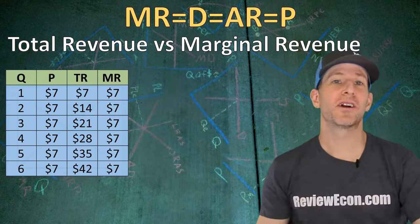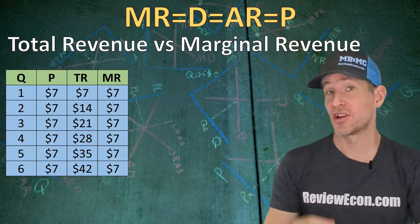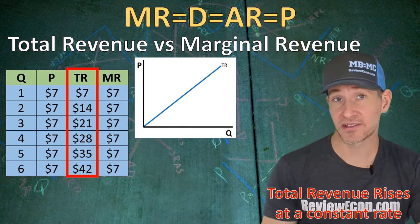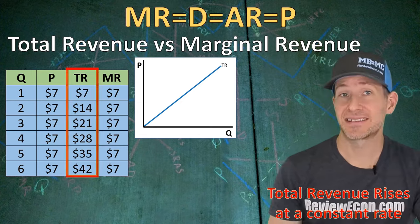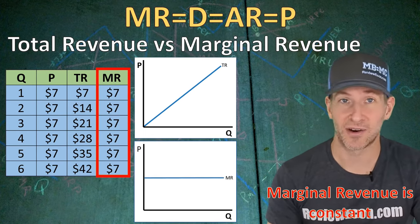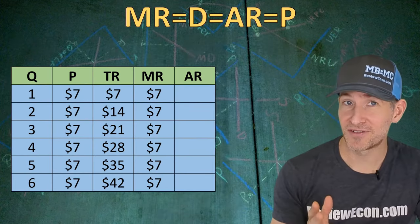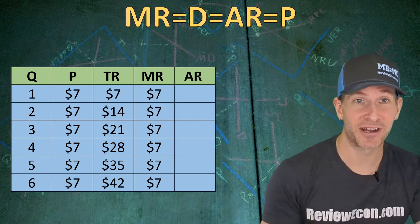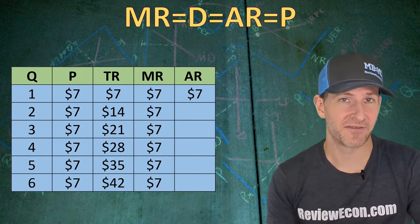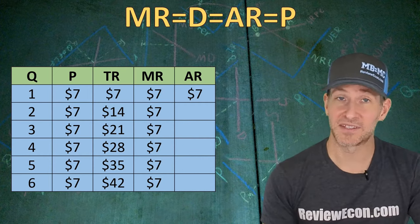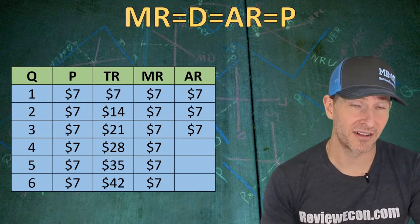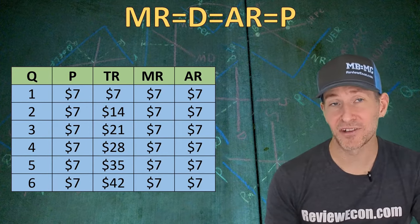We're going to graph the total revenue and marginal revenue curves for a perfectly competitive firm. The total revenue curve is a linear curve that slopes upward at a constant rate, because the price is constant with each additional unit of output. Since that increase in total revenue is constant, the marginal revenue — the change in total revenue — is also constant, giving us a horizontal marginal revenue curve. The average revenue equals total revenue divided by quantity: $7 ÷ 1 = $7, $14 ÷ 2 = $7, and so on. Our average revenue remains $7 at every quantity.